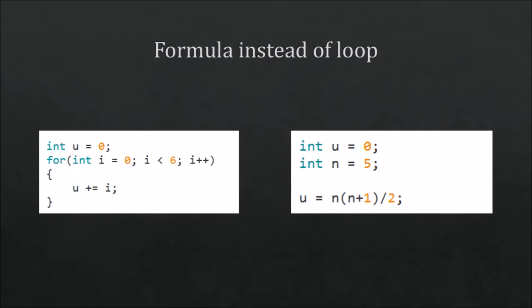I'm going to first watch the actual formula instead of a loop and that's what's happening here. We got the for loop on the left side and a formula on the right side. Of course the right side is easier and better optimized because it's only one line.